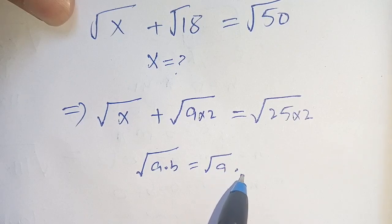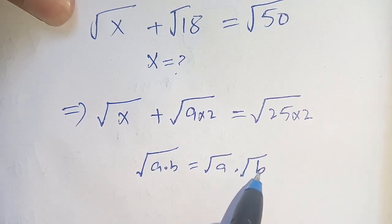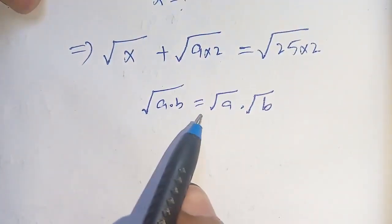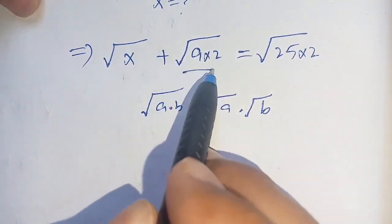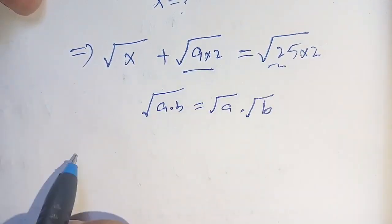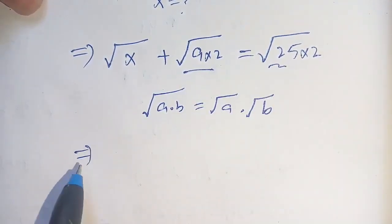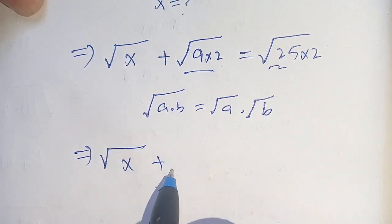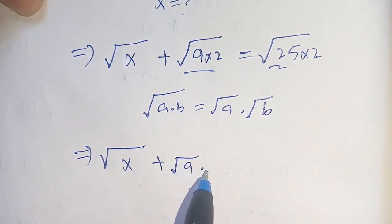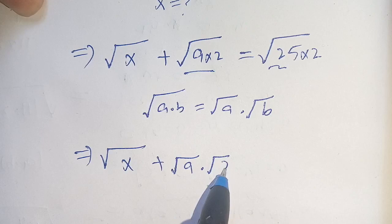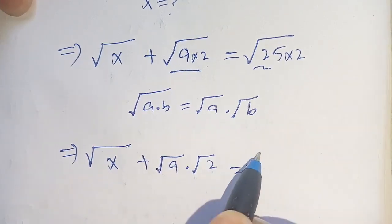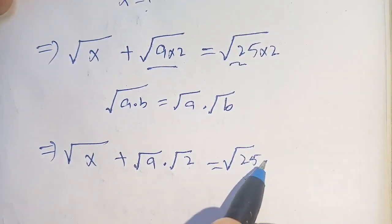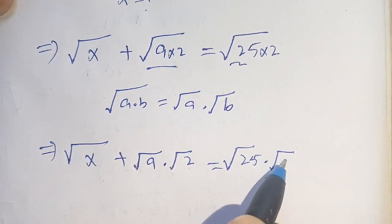We know that square root of a times b is equal to square root of a times square root of b. We use this identity in both terms, and we get: square root of x plus square root of 9 times square root of 2 is equal to square root of 25 times square root of 2.